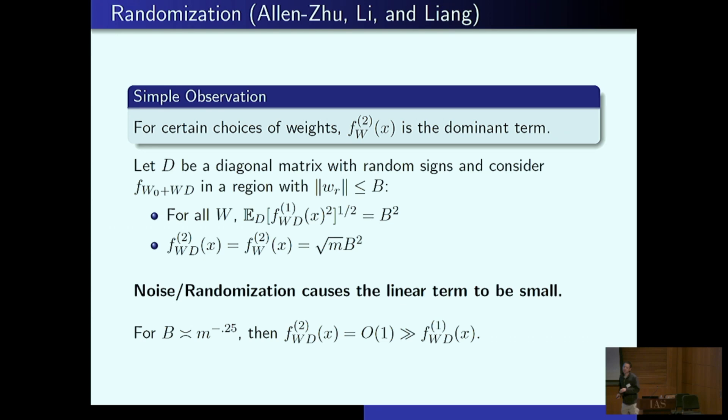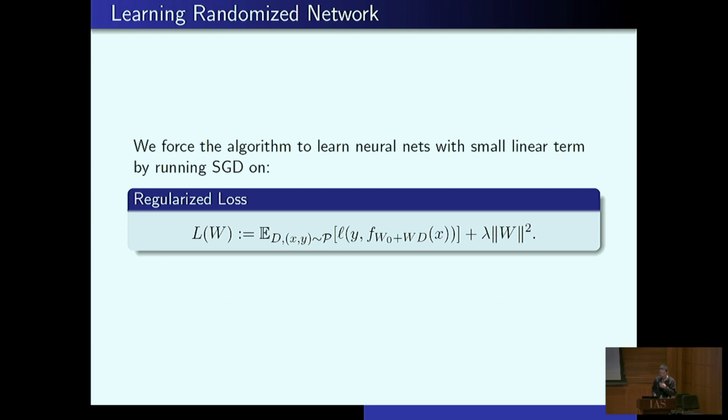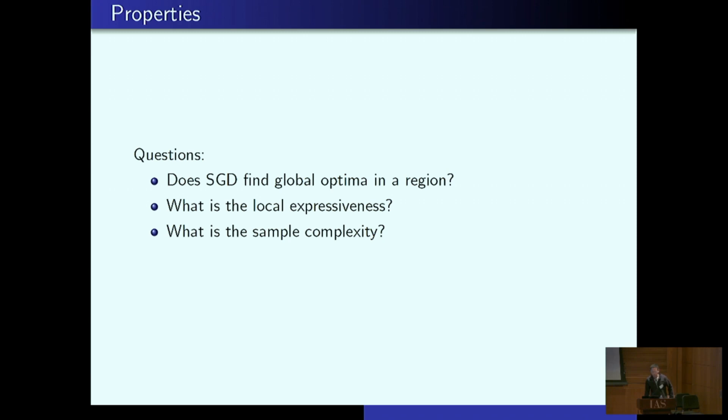Okay, so the questions we would like to ask now are, there's three questions essentially. Can you optimize over this? Can you find a global optimum in this region? Can you find a point of low training loss in this m to the minus one quarter region? Is the network expressive in this region? So I don't really care about the global expressiveness, I only care about the expressiveness in this region that I'm able to optimize over, because I can't algorithmically use the rest of parameter space. And of course, what is the sample complexity? Where can you gain over, you know, just because you're optimizing over a larger region doesn't necessarily mean you gain a sample complexity.